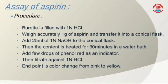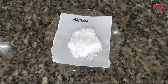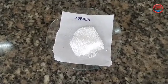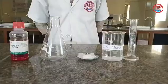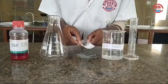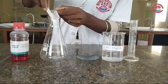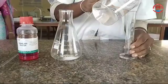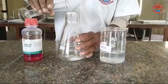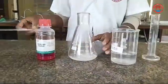Assay Procedure: The burette is filled with 1 normality hydrochloric acid. Weigh accurately 1 gram of aspirin and transfer it into a conical flask. Add 25 ml of 1 normality sodium hydroxide to the conical flask.